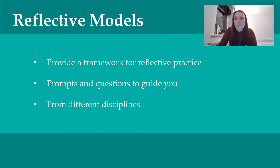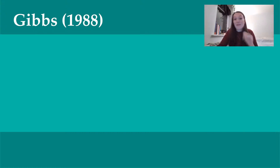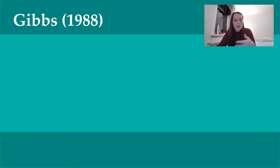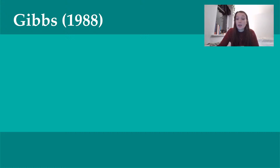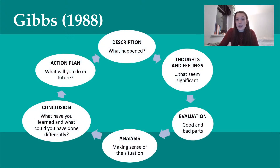So let's move on to our first model of the evening — the Gibbs model, 1988. This is probably the most well-known model. If you look up reflective practice or reflective models, Gibbs is most likely going to be at the top of that list. It was developed in 1988 to give a bit of structure to learning from experiences, and it looks like this — as you can see, it's a cycle.